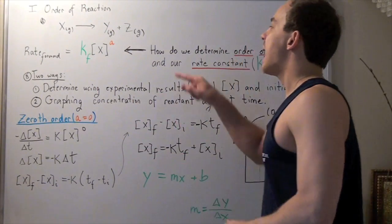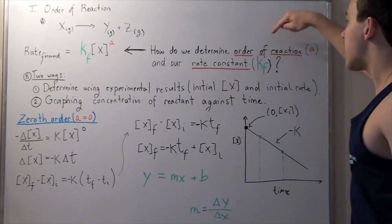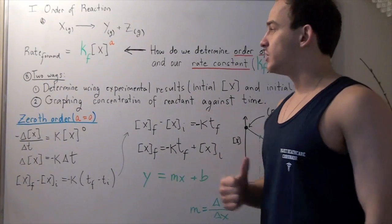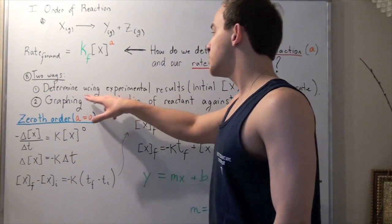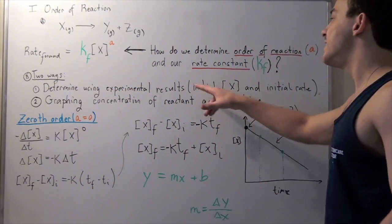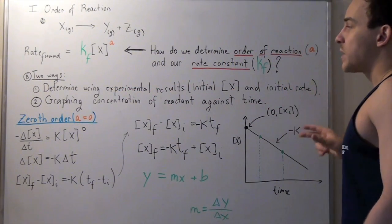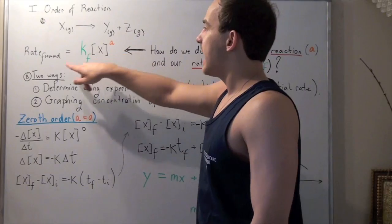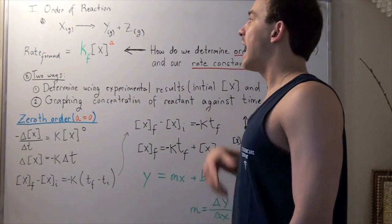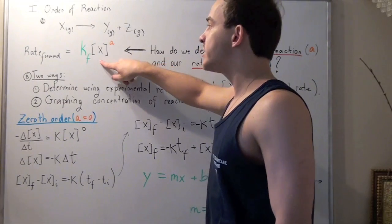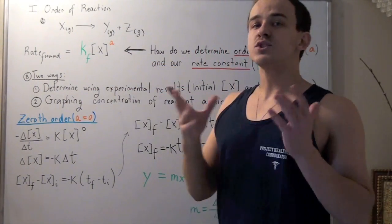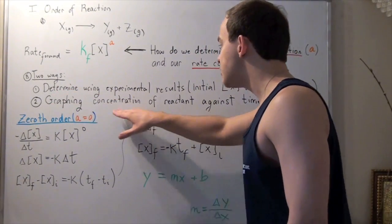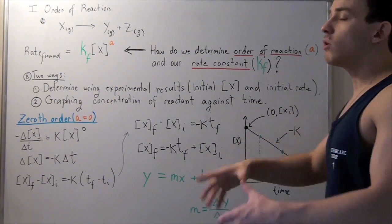How do we determine the order of our reaction — namely A — and our rate constant KF? One way is to use experimental results: we find the initial concentrations and the initial rate, and use that information to determine the relationship between A and the rate of reaction. Using that and our concentration, we can then find KF. A second way is with graphing — we can graph concentration of reactant against time, or progress of reaction. There are three main graphs we can get.